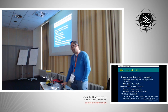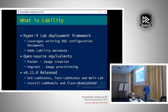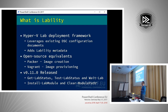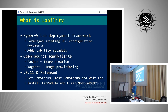So what is lability? It's a module I put together internally originally. We needed a way of deploying a consistent development, testing, and training environment. We do a lot of training in the end-user compute space - Citrix and that sort of stuff. We needed to deploy training environments in a consistent fashion. We were running on XenServer originally, then moved to AWS, then Ravello, and now looking at Azure Dev Test Labs. DSC was the answer for spinning these environments up consistently.